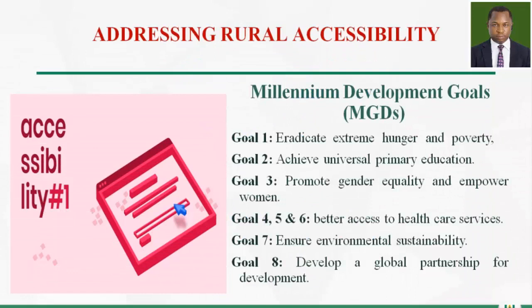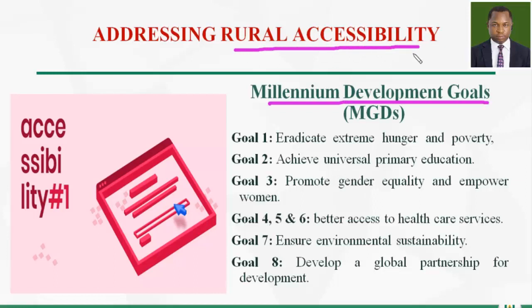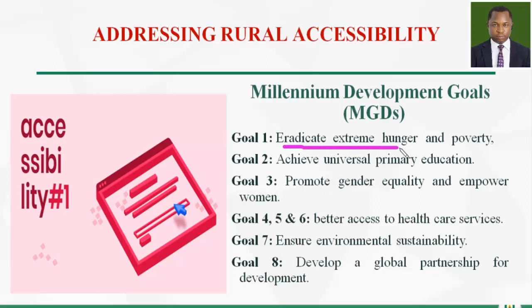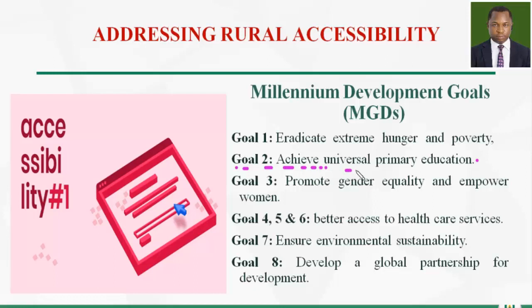The Millennium Development Goals have captured different key areas to address in order to solve the rural accessibility problem. These elements are contained in Goals 1 to 8. Goal 1 is to eradicate extreme hunger and poverty — hunger and poverty being an offshoot of the inaccessibility of rural areas. With good roads where people can transport their produce to markets and engage in different economic activities, hunger and poverty will be reduced.